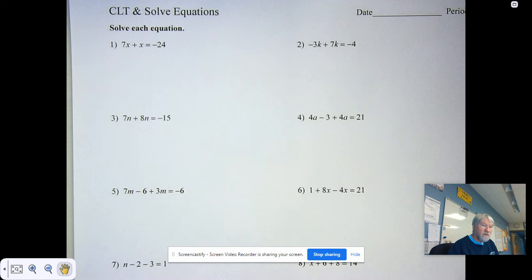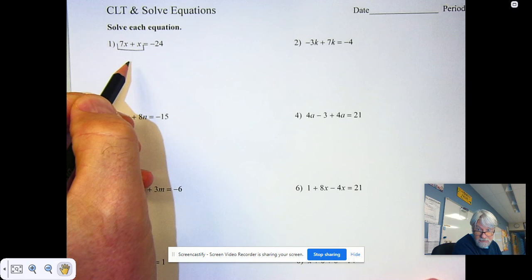Today's assignment is called combining like terms and solving equations. In order to do a problem like number one, where it says 7x plus x equals negative 24, we have to first combine these like terms.